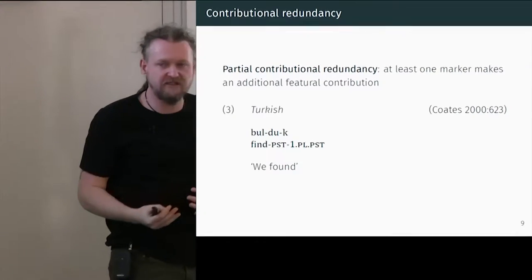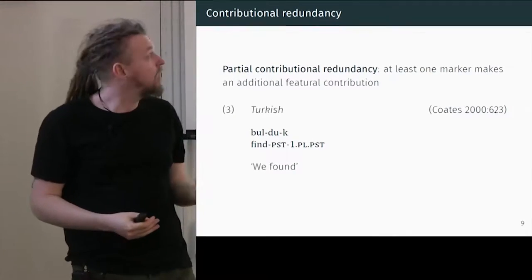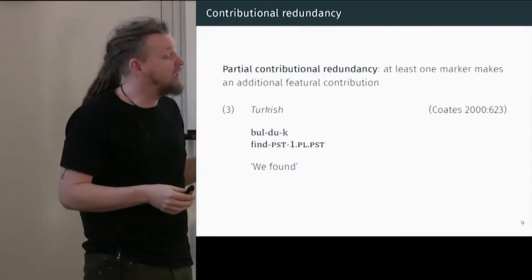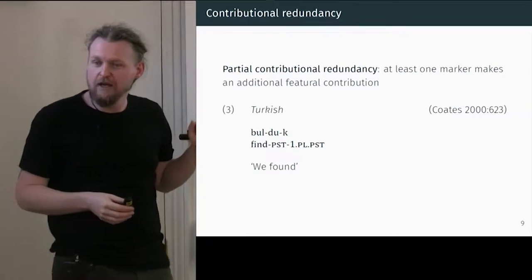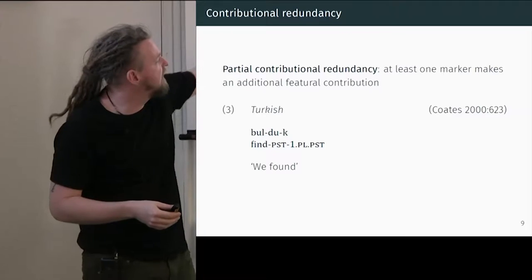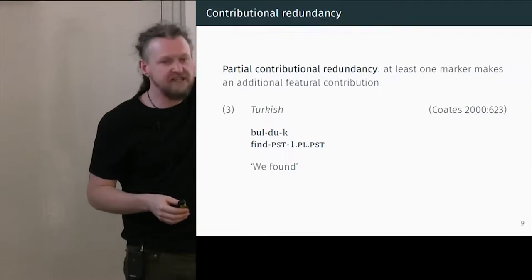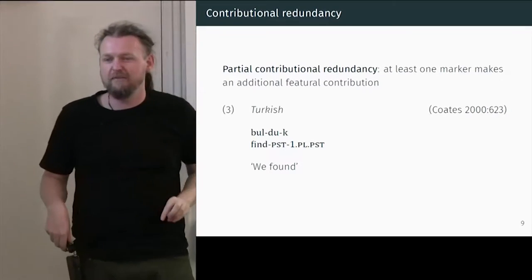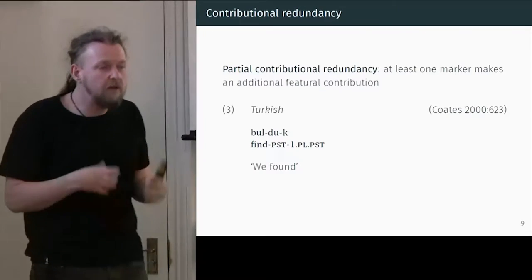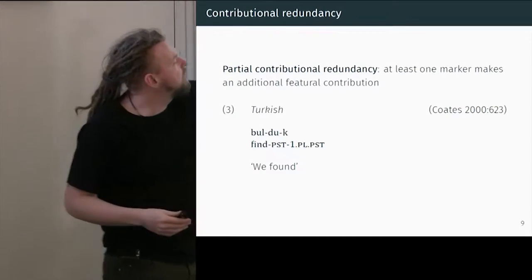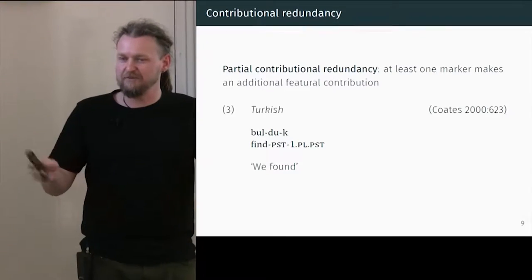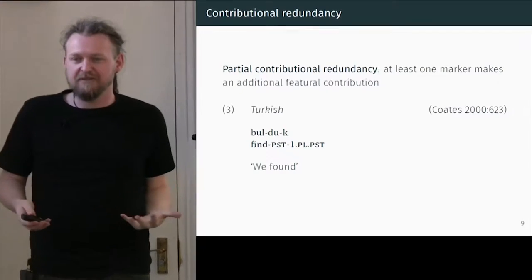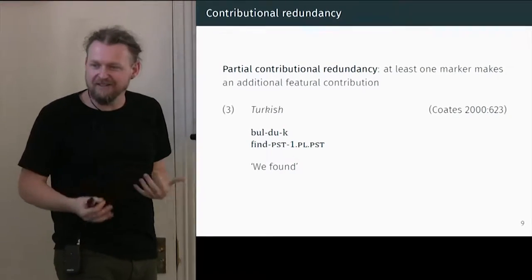But it's not the only way — you can also get a more asymmetric relation: what I'm calling partial contributional redundancy, where one marker makes some additional feature contribution. For certain verbs in Turkish in the past tense, you get multiple marking of the past: you have the stem, a dedicated past marker which occurs everywhere, but then a special first-person plural agreement that only occurs in the past tense. So we have multiple exponents of past tense. If we lose the 'du', we still know it's past tense — it's redundant. But if we lose the 'k', we lose the agreement marking. So one's more redundant than the other in some way.